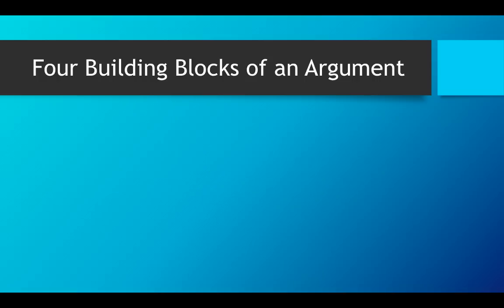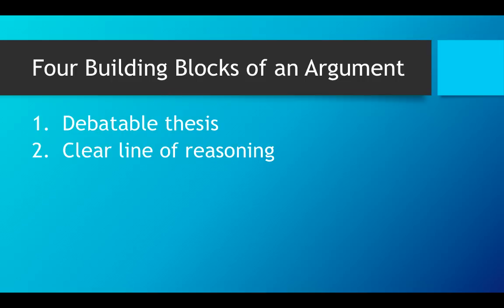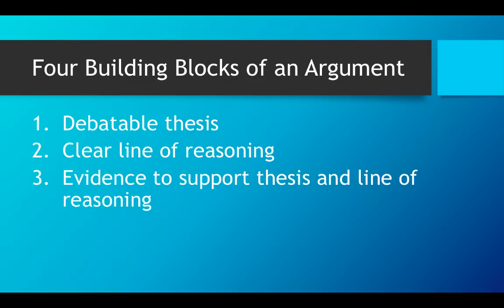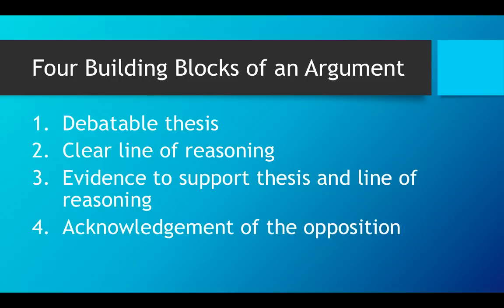There are four building blocks of an argument. The first is a debatable thesis — that's what we're going to talk about in this video. Once you have a debatable thesis statement, then you develop a line of reasoning. A line of reasoning is when you tell your reader why you think whatever it is you stated in the debatable thesis statement. Then, after we've developed a line of reasoning, we're going to find evidence to support our thesis and line of reasoning.